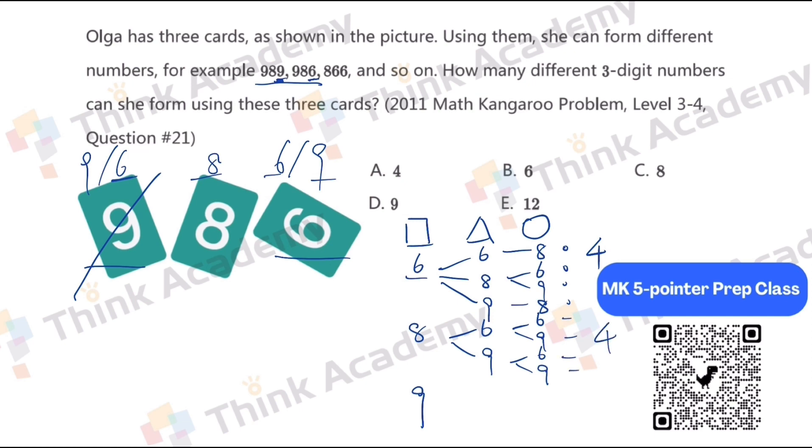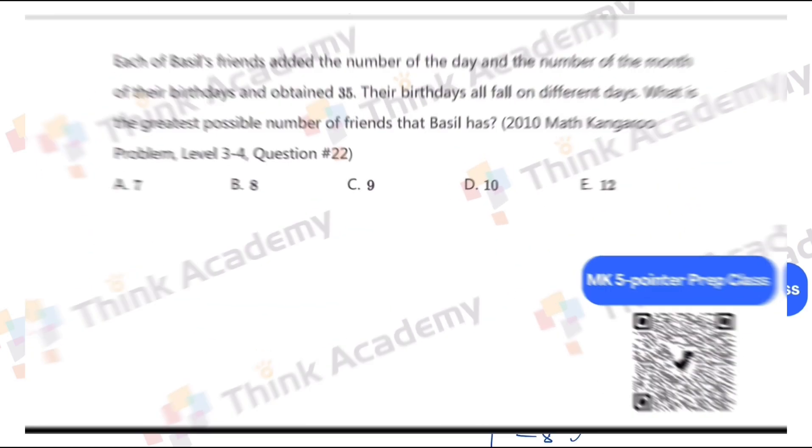And if the square is 9, then the triangle, same as the first one, right? 6, 8, 9. If it's 6, the circle can only be 8. And then 6, 9, 8. 1, 2, 3, 4, 4. So we got 4 times 3, which is 12. So E is the answer.